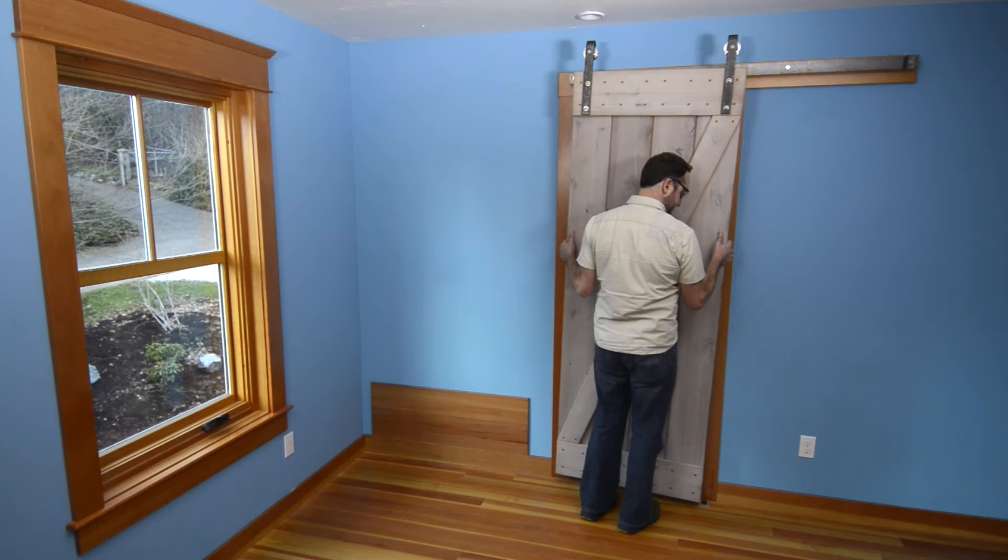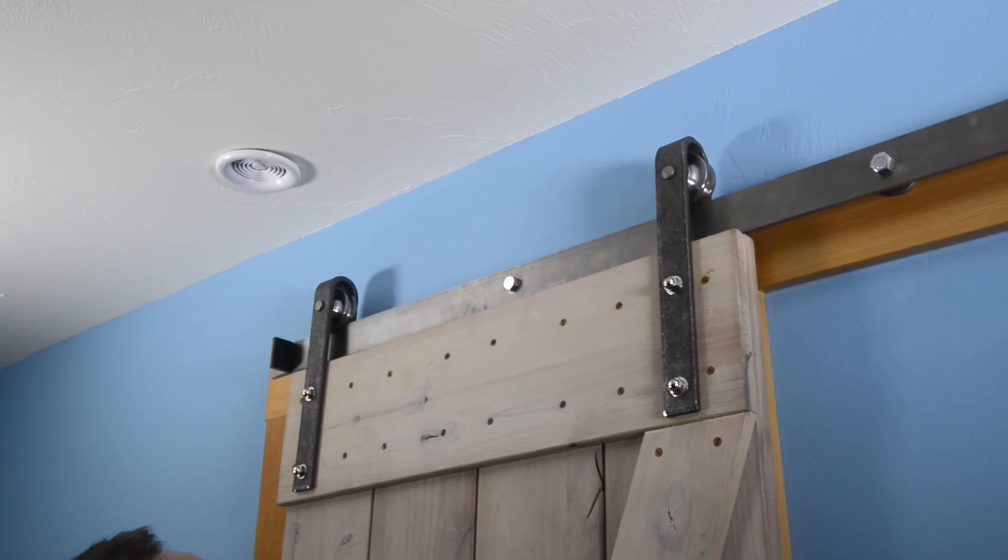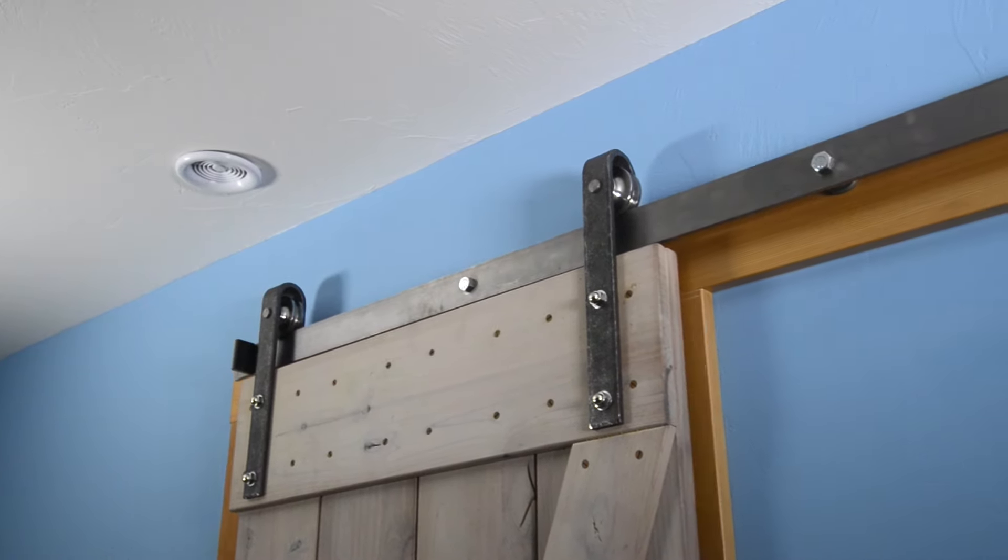To attach your door, simply lift it and place the track into the grooves of your hanger wheels. Move the door from end to end to test how the door slides.